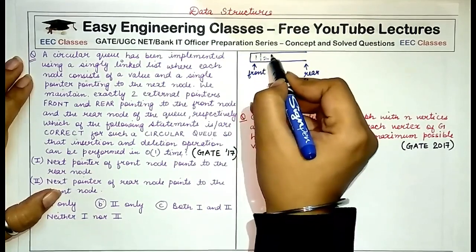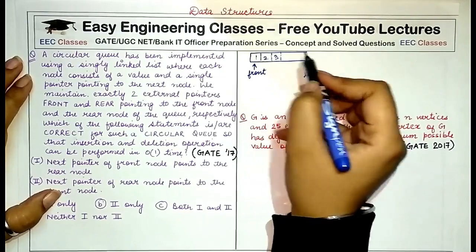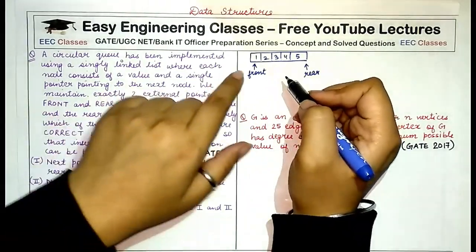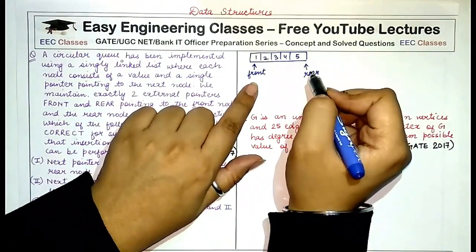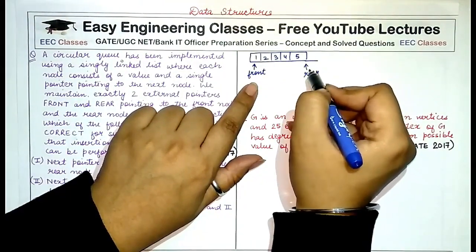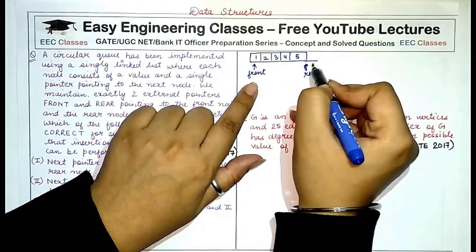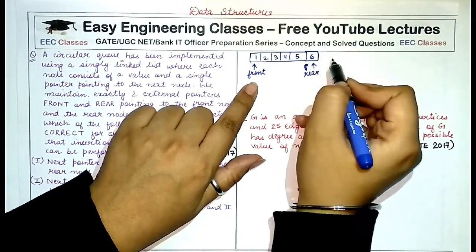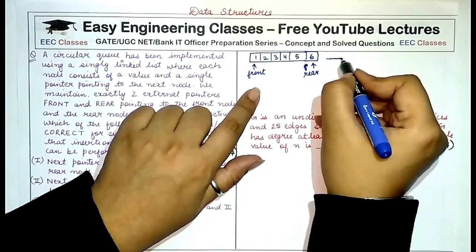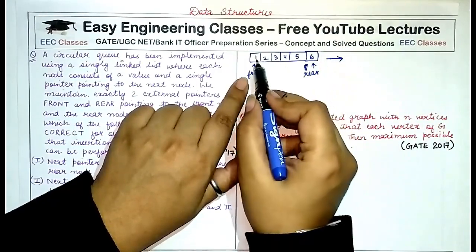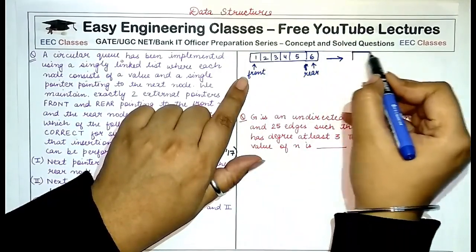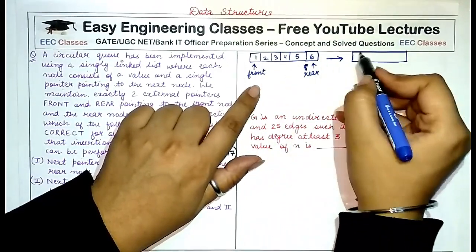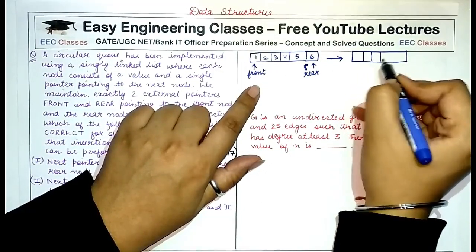If I have elements like this and I have to enqueue another element, I'll increment the rear pointer and insert another element. In case I have to delete elements — suppose three elements — I will use the front pointer for deleting them, so the queue would look like this.